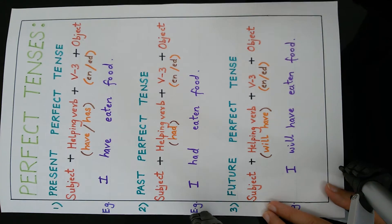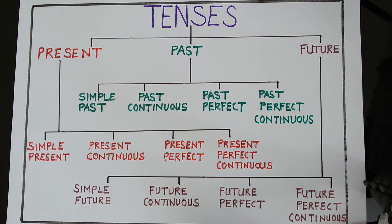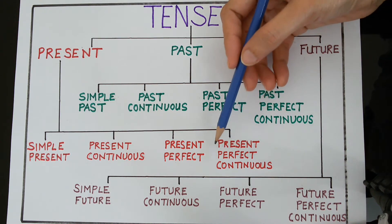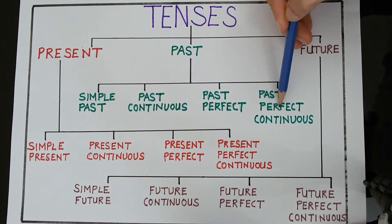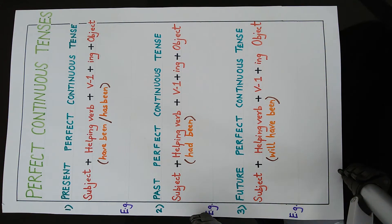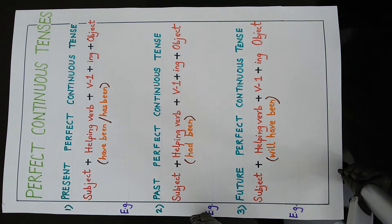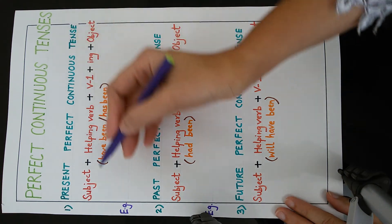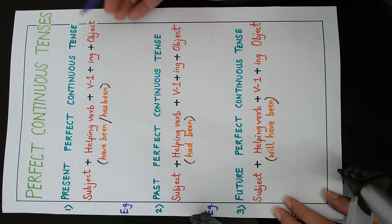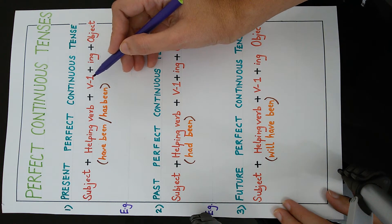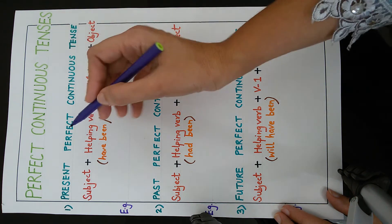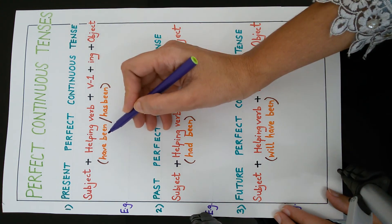We have completed perfect tenses. Now we come to the last part, perfect continuous tenses, which includes present perfect continuous, past perfect continuous and future perfect continuous. For present perfect continuous tense, the formula is subject plus helping verb plus V1 plus 'ing' plus object. Because this is also a continuous tense, we return to V1 plus 'ing'. The helping verb here is 'have been' or 'has been'.